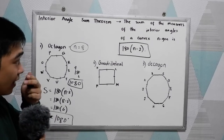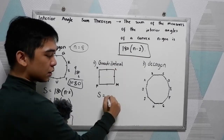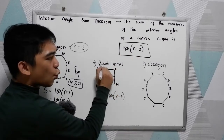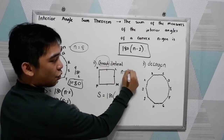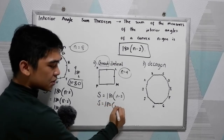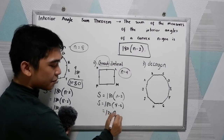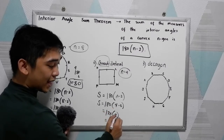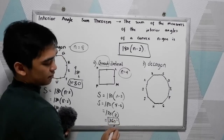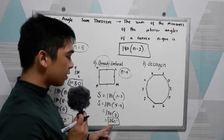Now for the quadrilateral — to get the sum, again use the formula 180 times N minus 2. For a quadrilateral, N is equal to 4. So S is equal to 180 times 4 minus 2, which is 180 times 2, giving us 360. So the sum of interior angles in a quadrilateral is 360.